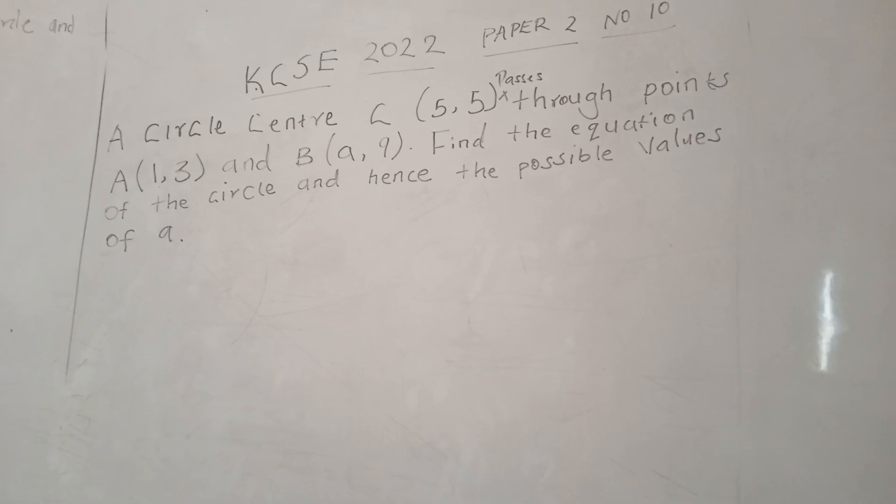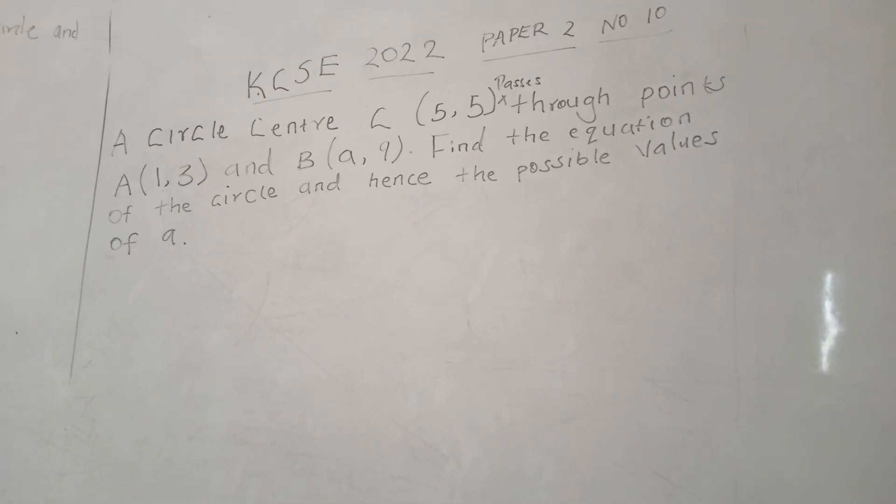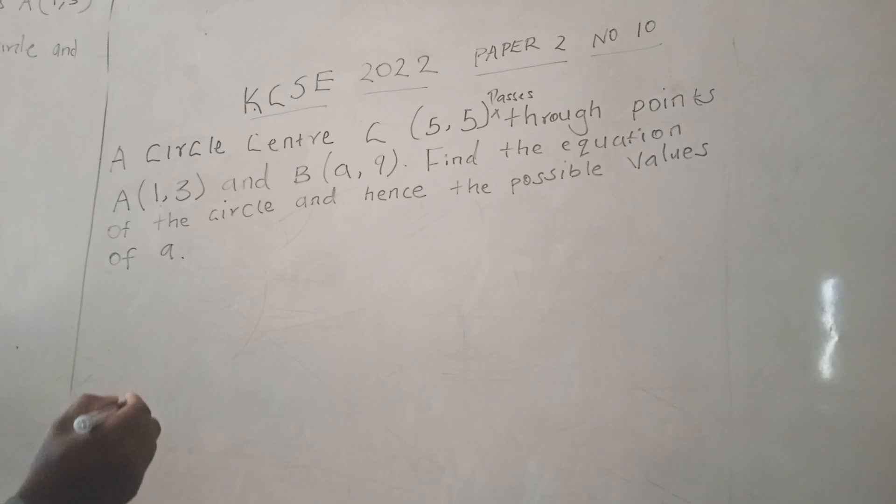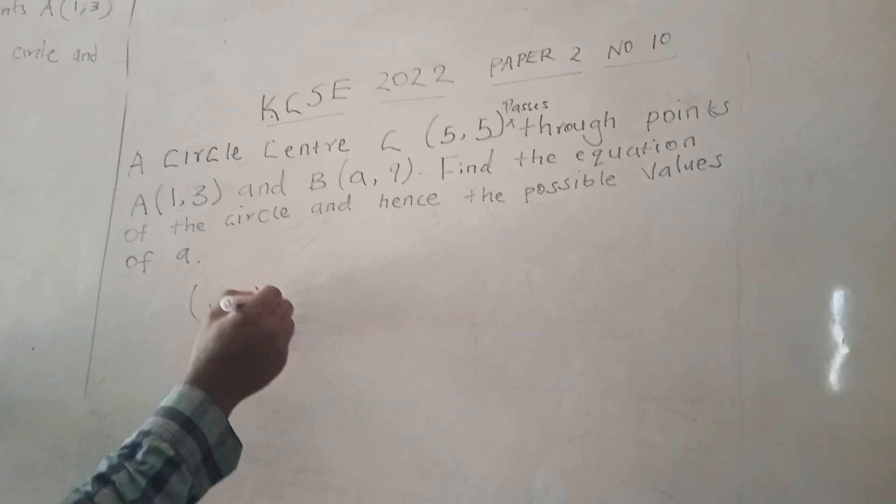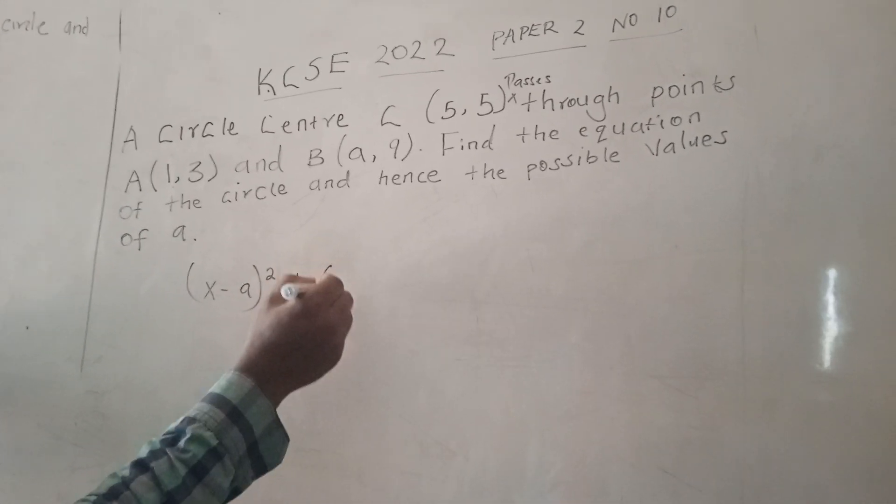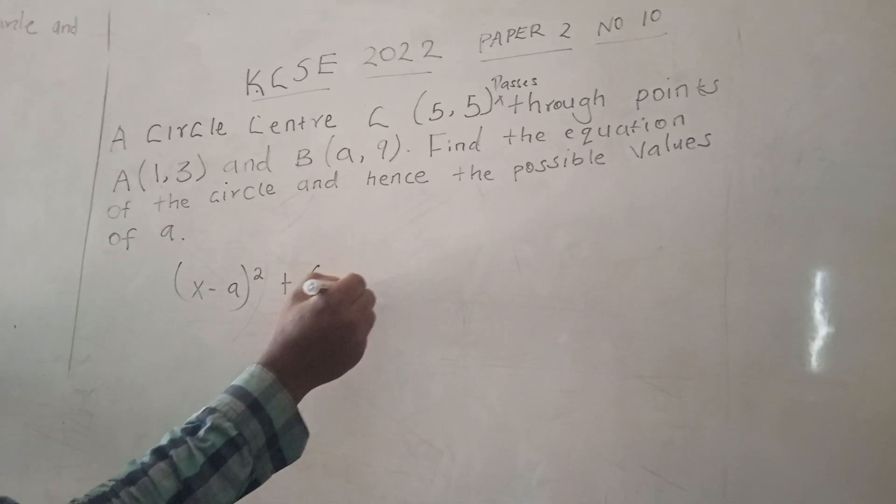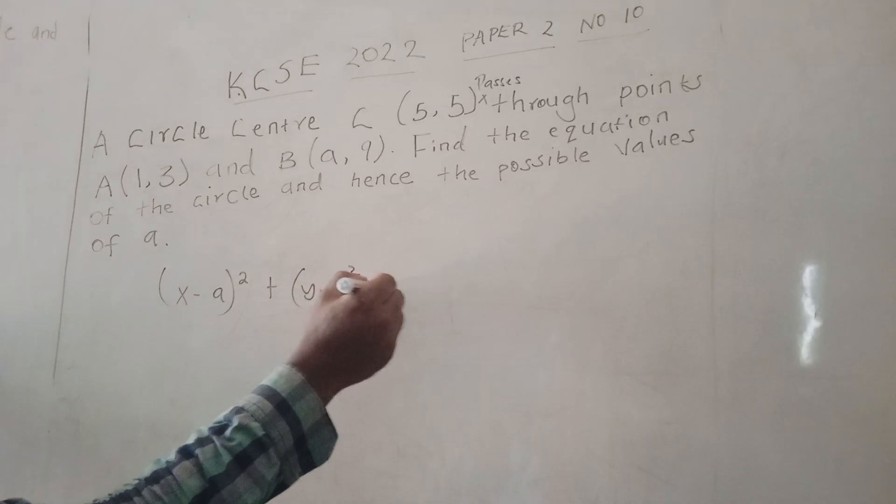Now we know that the general equation of a circle is given by (x - a)² + (y - b)² = r², where a and b are the coordinates of the center of the circle.